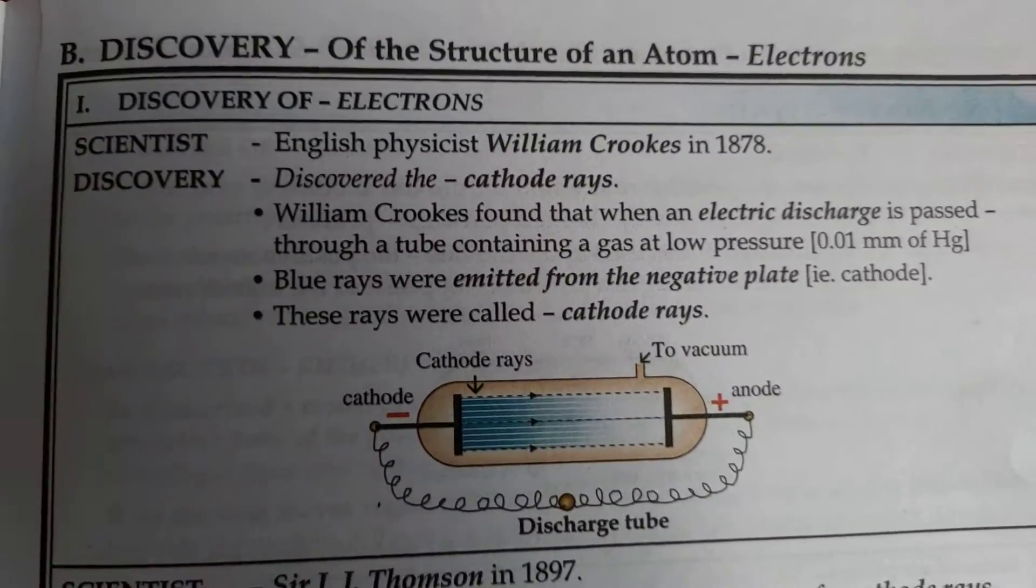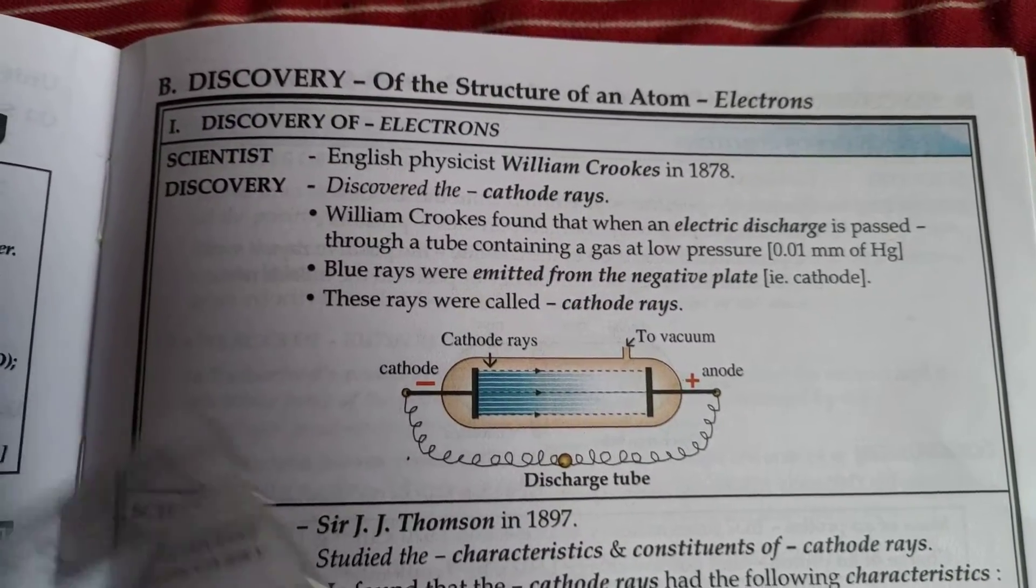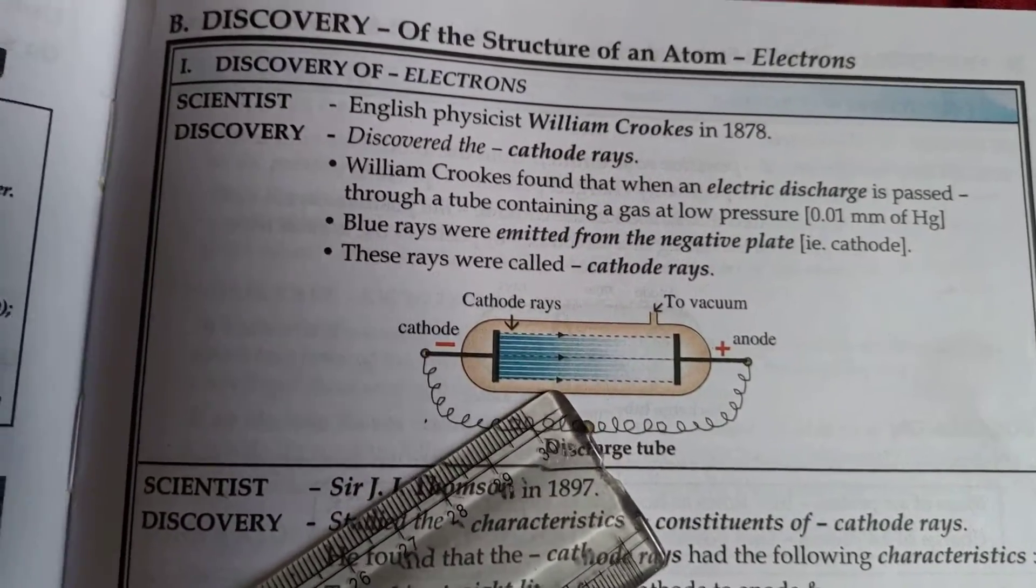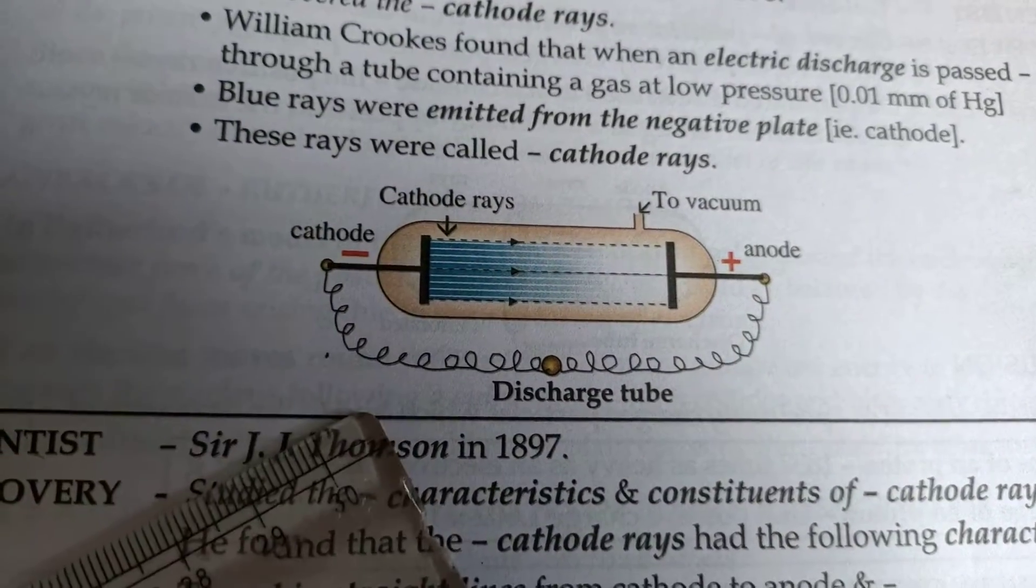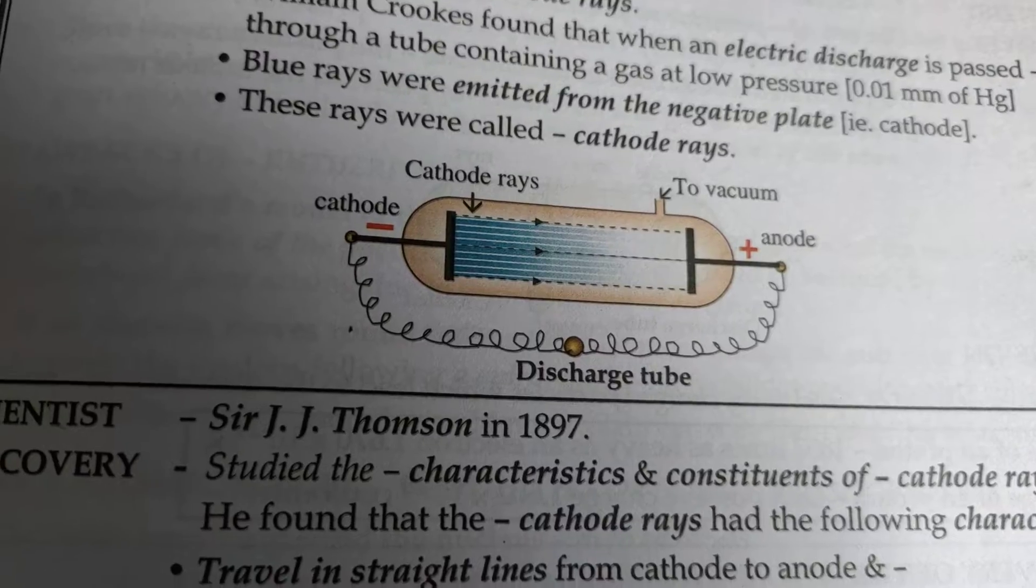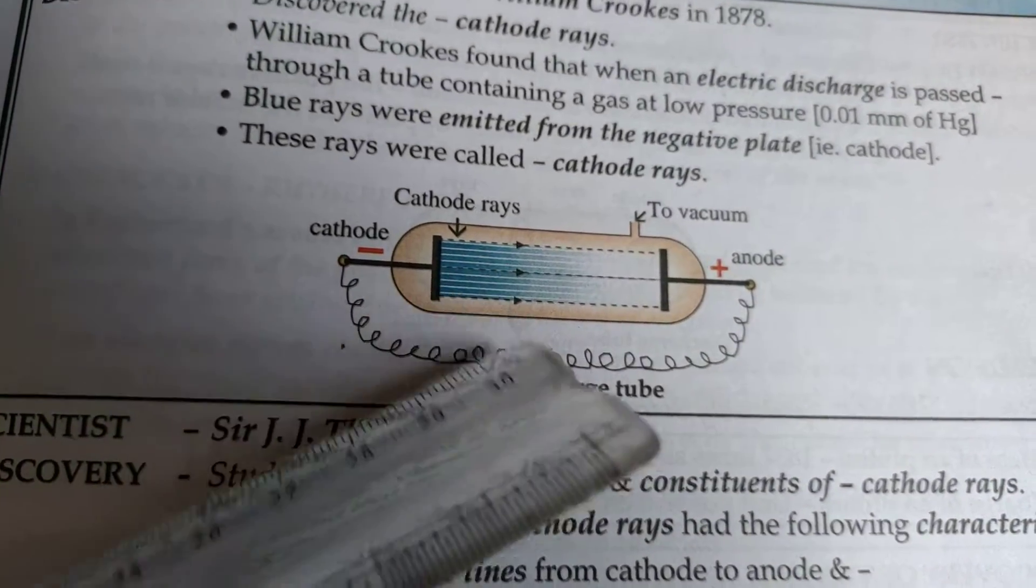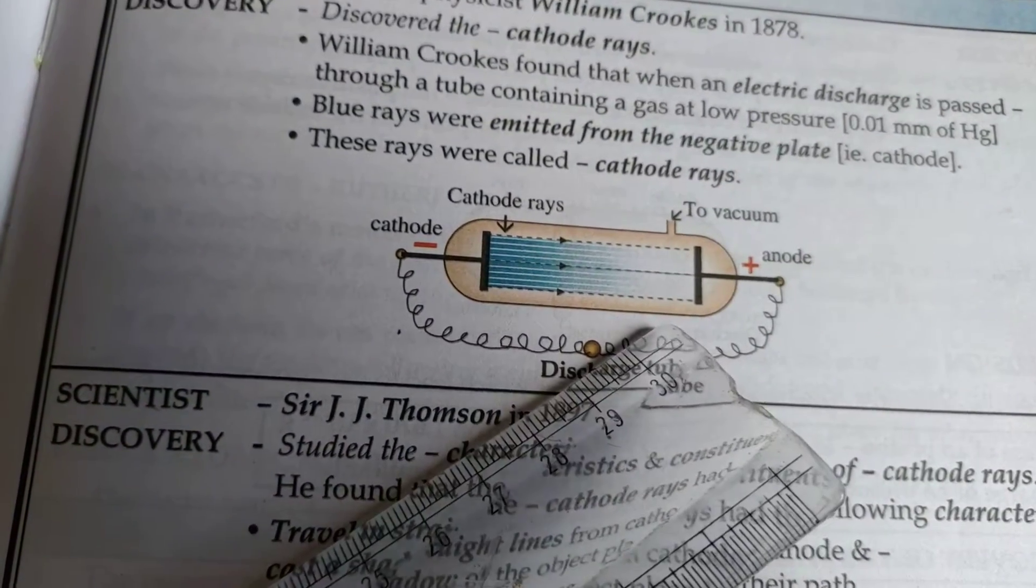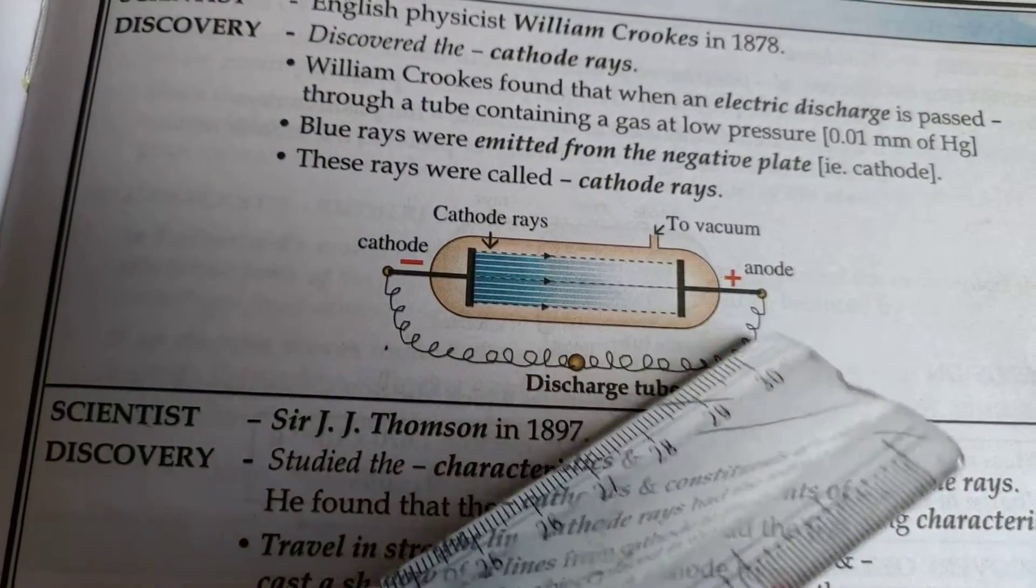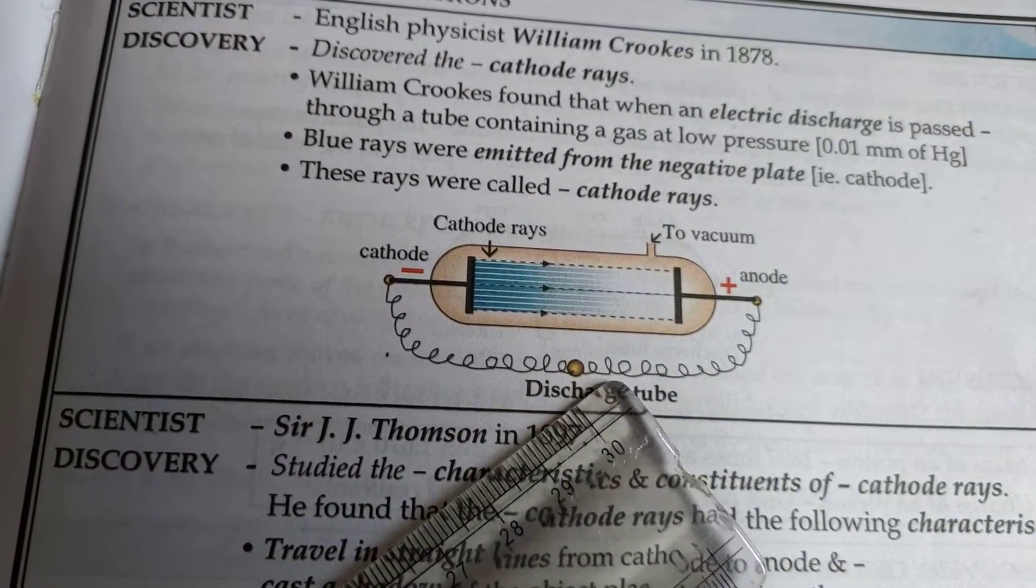Now let us focus on the discovery of electrons. Now before you I'm showing you a picture of a cathode ray. The cathode ray tube is nothing but a tube that was used earlier for television screens. It's exactly the same thing which contains two electrodes in a vacuum chamber, and these electrodes are connected by a high voltage electric discharge tube.